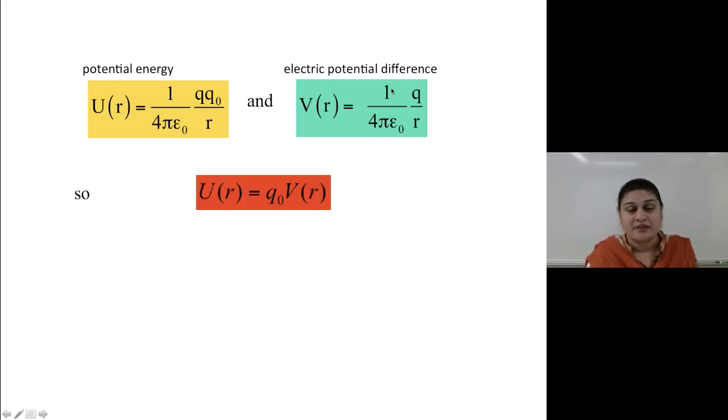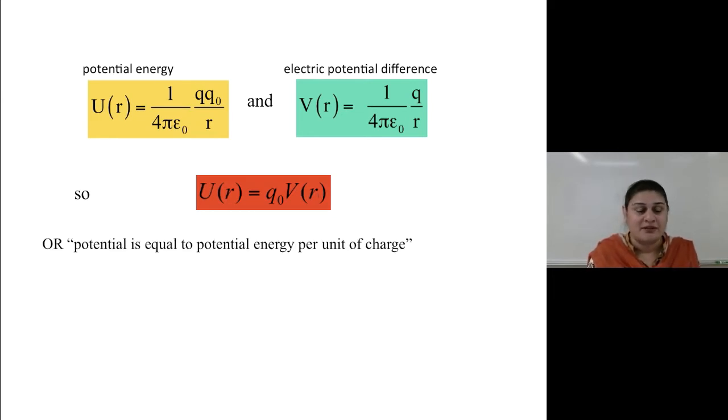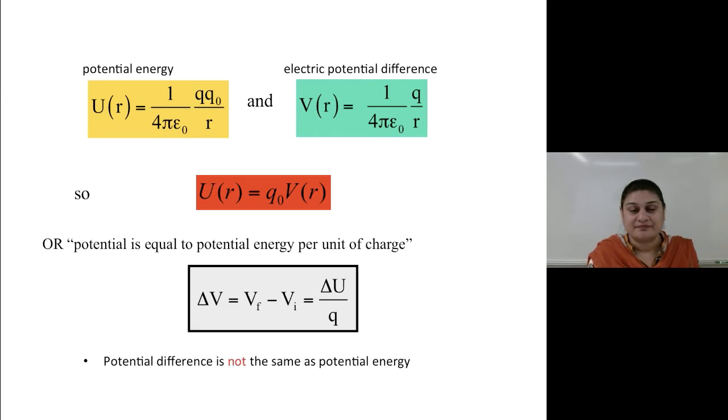UR, which is potential energy, equals QVR. Or, in words, potential equals the potential energy per unit of charge. Remember, potential difference is not the same as potential energy. This is one of those concepts that everybody gets confused about. So be very, very careful.